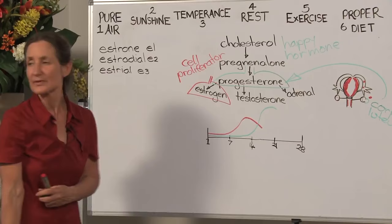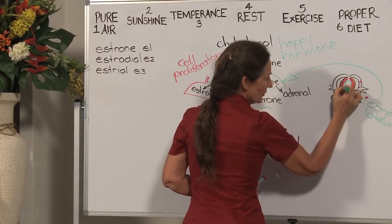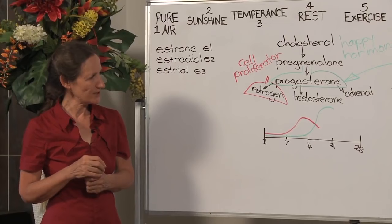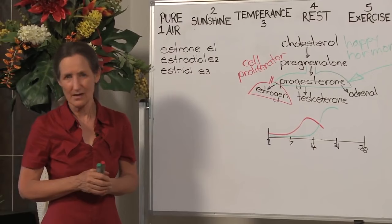At this time of the month, progesterone is having a ripening effect on the lining of the uterus, putting the finishing touches on the uterus. I liken progesterone to the plasterers and the painters. Progesterone has another effect - as the happy hormone, it heightens a woman's mood at this time of the month to the point of increasing her sexual desire.